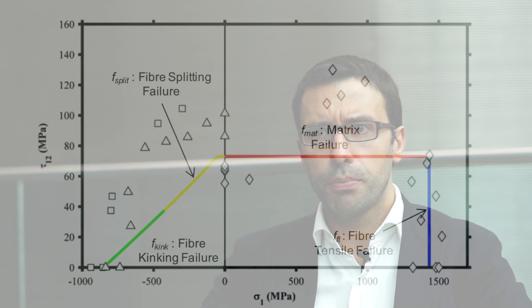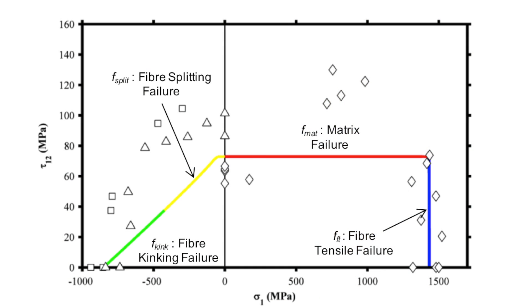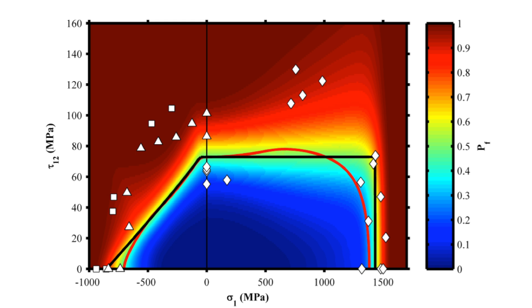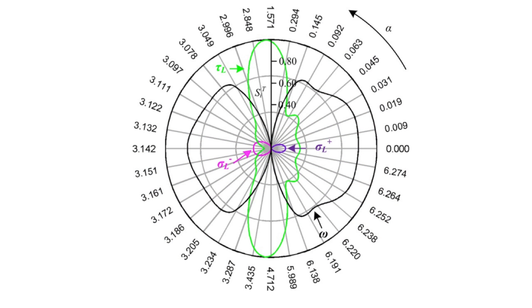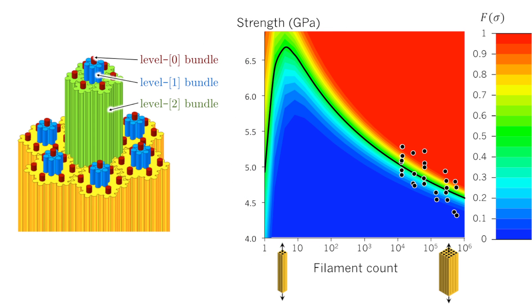While most failure models in the literature are deterministic, the uncertainty associated with material properties as well as loading conditions typically leads in experiments to a stochastic response. Our main contributions in stochastic failure models have been to use Monte Carlo simulations to predict stochastic failure envelopes, to apportion the variability verified experimentally to corresponding material properties and loading conditions, and to develop an analytical stochastic strength model for the fiber tensile failure mode.